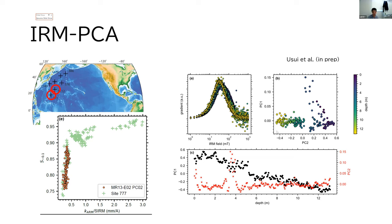At first look, the IRM acquisition curves are explained by two trends in principal component space. But in fact,